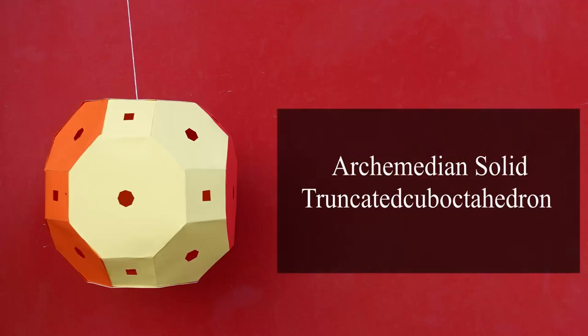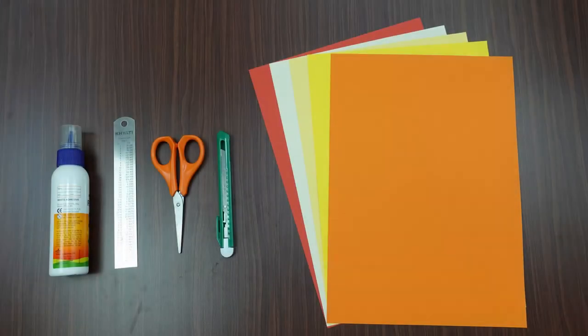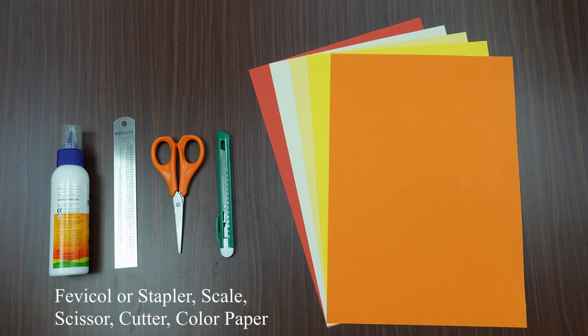Today we will learn how to make a truncated cuboctahedron Archimedian solid. For that we need some colored paper, scale, glue, scissor, cutter, etc.